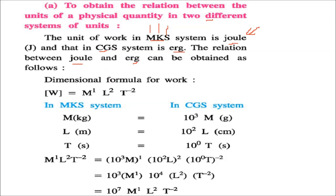The dimensional formula for work is M¹ L² T⁻². In the MKS system, M is kg, L is meter, T is second. In CGS: 1 kg = 10³ grams, 1 meter = 10² centimeters, and time (second) remains the same, so the conversion factor for T is 10⁰.